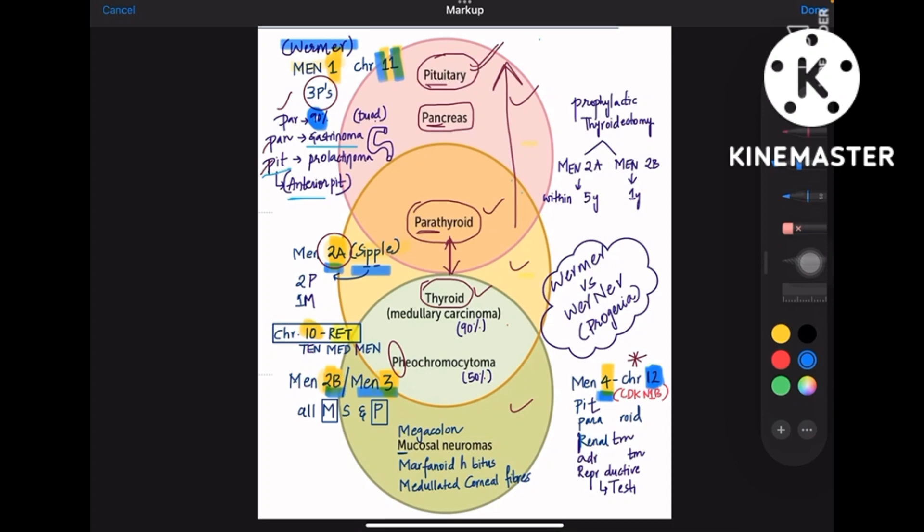MEN1 is about three P's as already discussed: para, pan, and pit. When we talk about parathyroid gland, it is 90 percent involved. So if a person is diagnosed with MEN1 syndrome, 90 percent chance of parathyroid gland involvement is there.